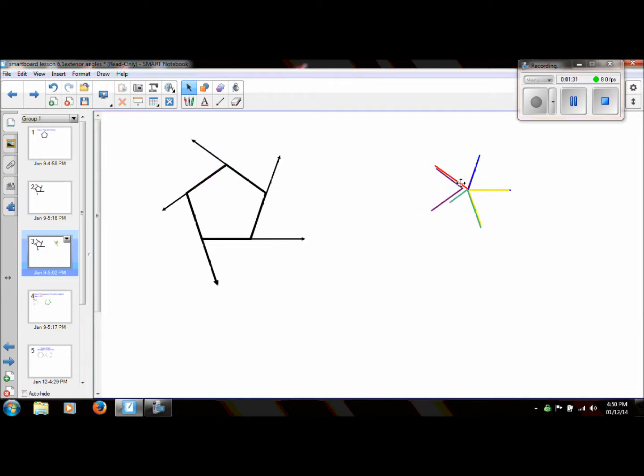All of these exterior angles line up perfectly, and they form 360 degrees. And it doesn't matter how many sides the polygon has, this will happen every single time.